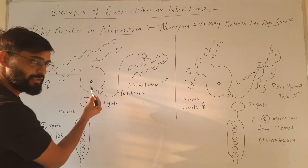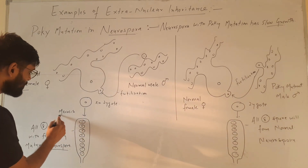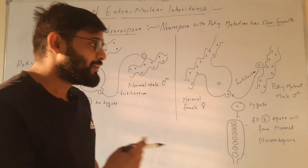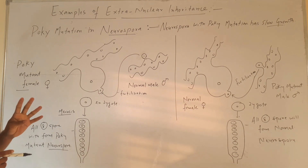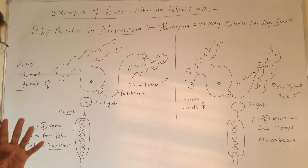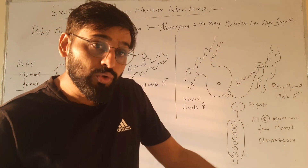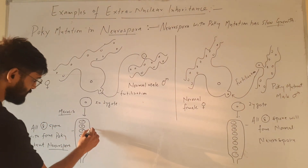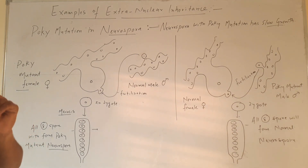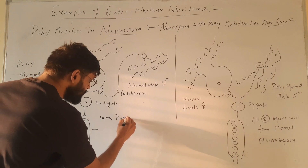This male gamete will fuse with this egg and they will form a zygote. After the zygote there will be meiosis, because in fungi normally zygotic meiosis occurs — meiosis occurs after zygote. Here zygotic meiosis will occur and it will form 8 spores. These 8 spores will germinate and they will form new Neurospora, and here all these spores will form Neurospora with poky mutation.